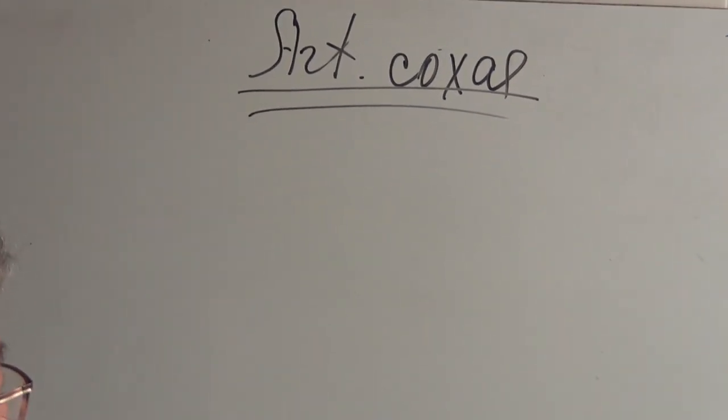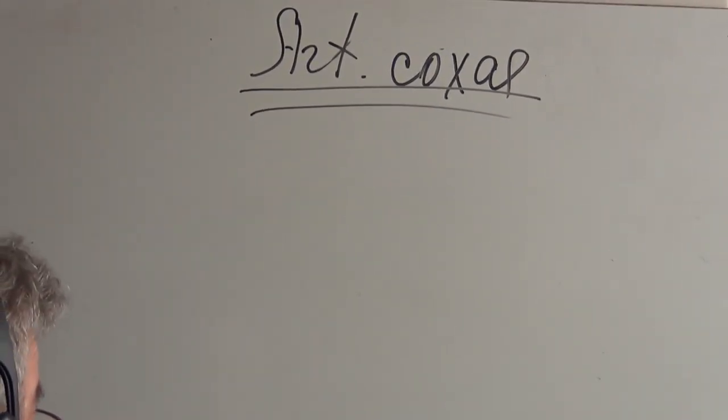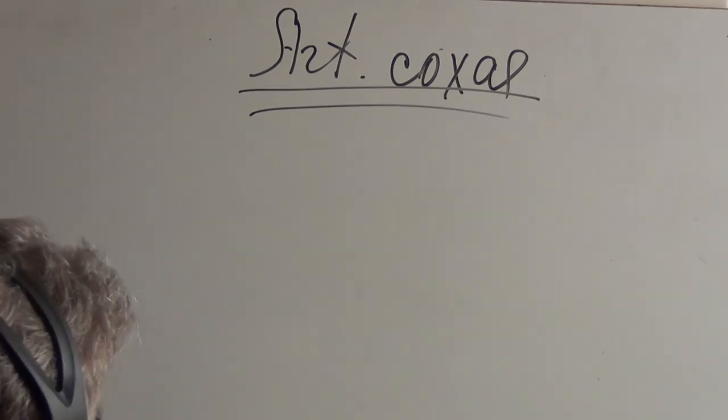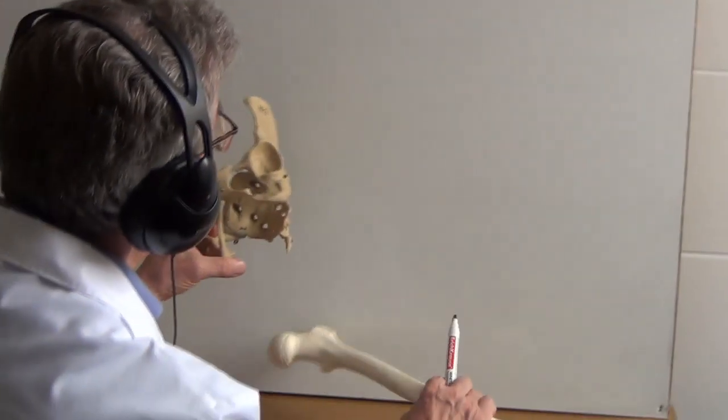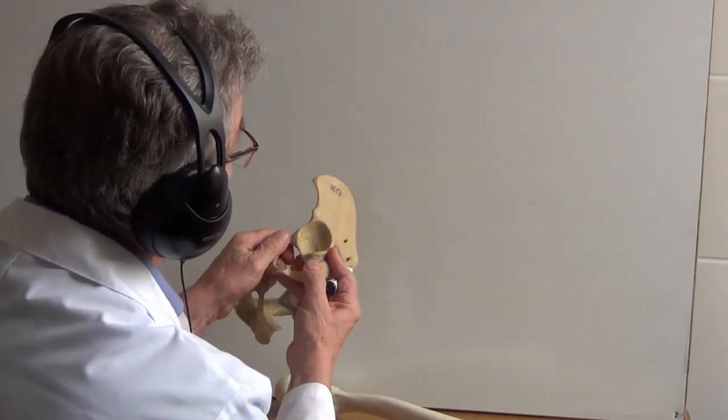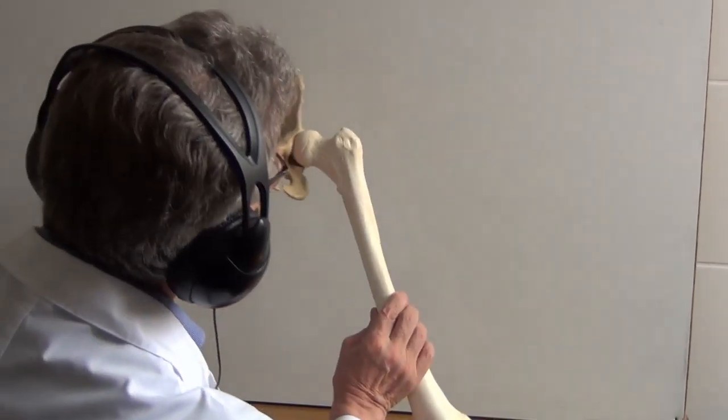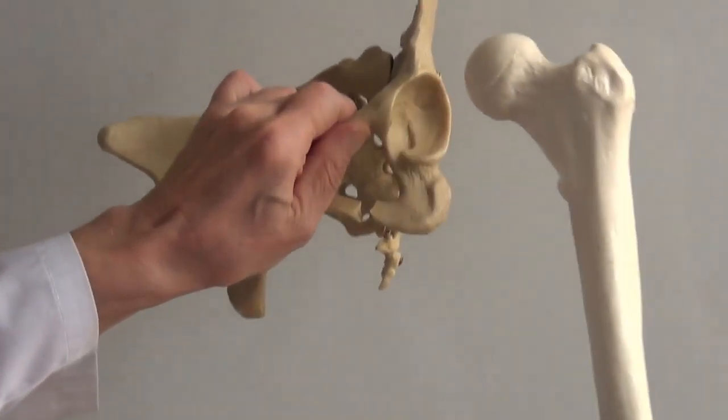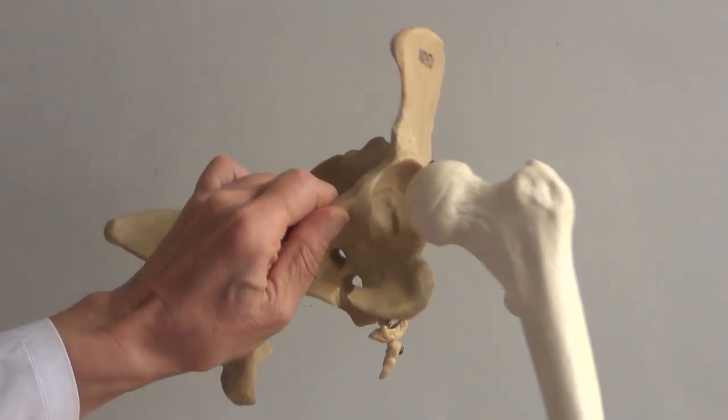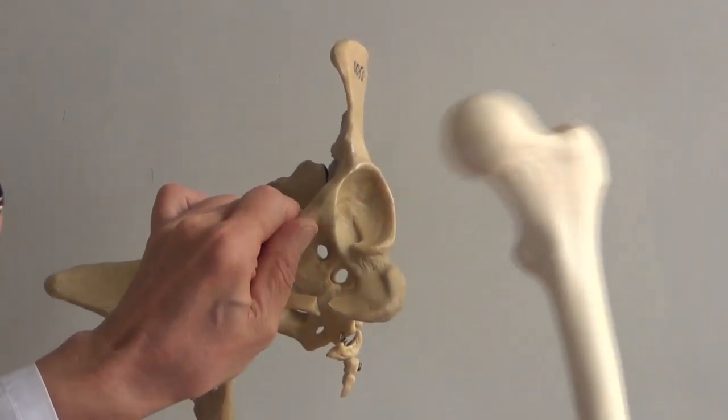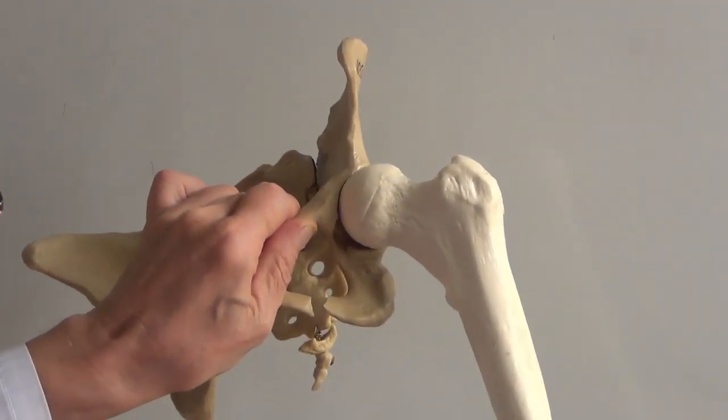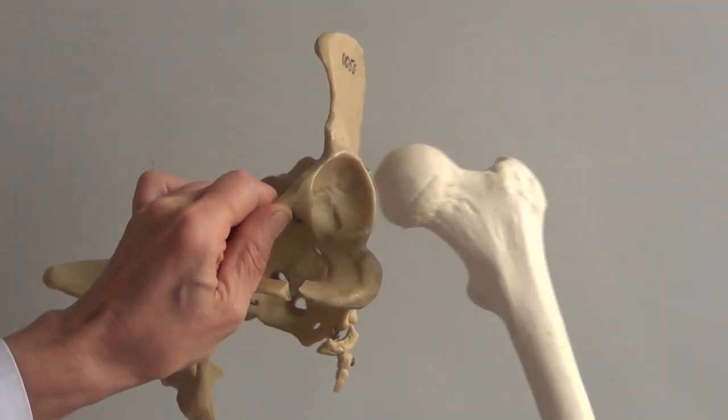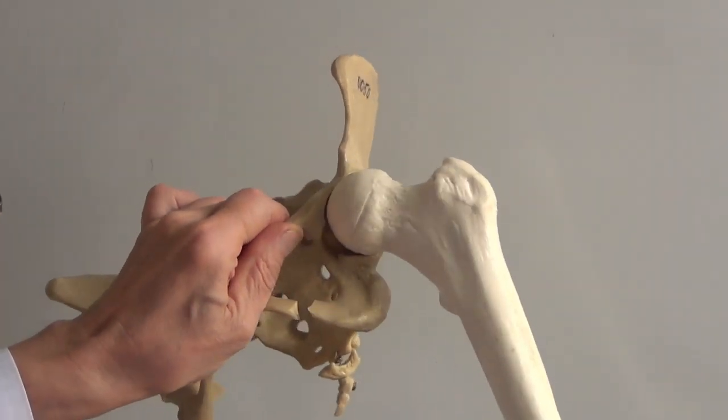Our next question is Articulatio coxae or hip joint. Articulatio coxae is a joint between the acetabular fossa of the hip bone and the caput femoris.